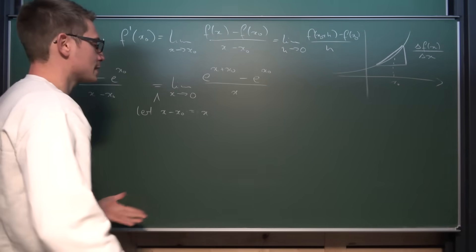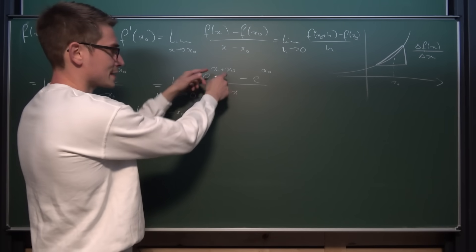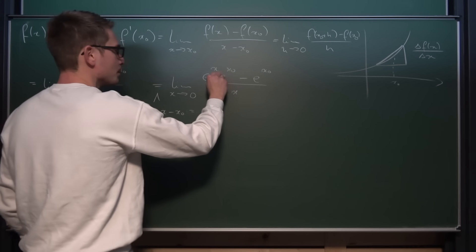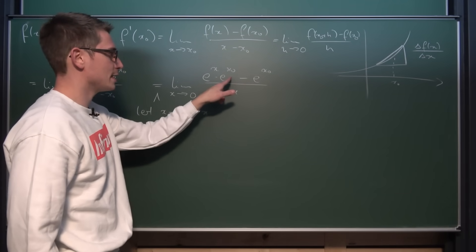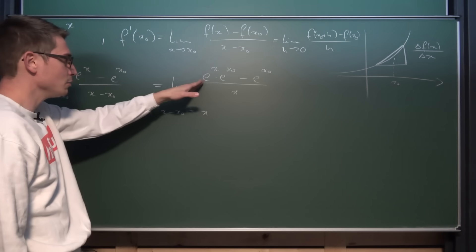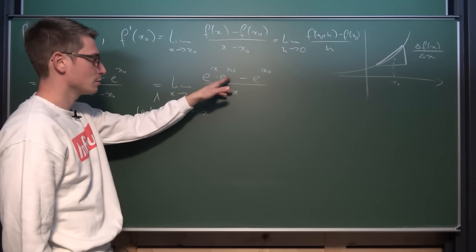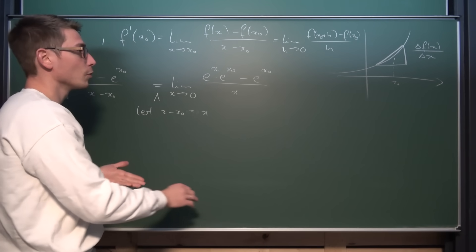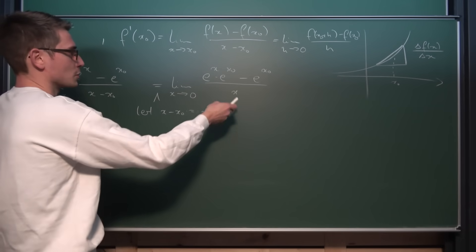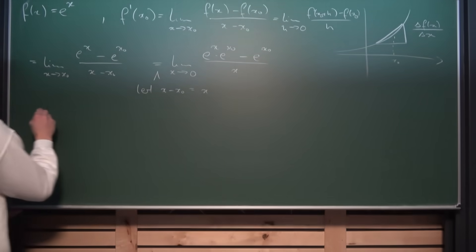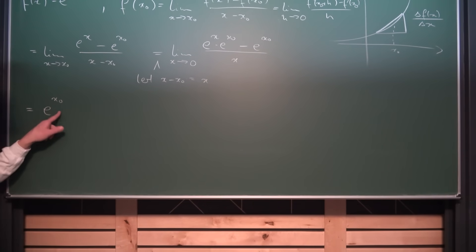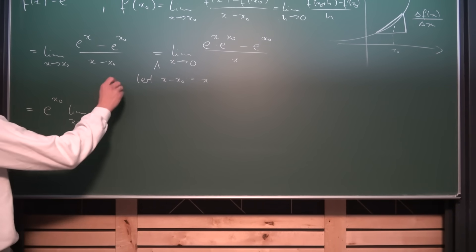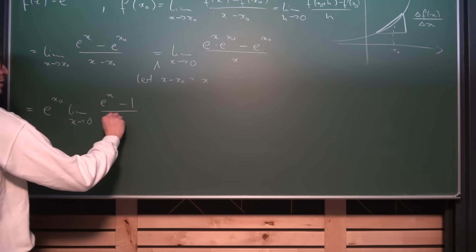From this point we can start to factor things out. Notice that e^(x+x0) is the same as e^x times e^(x0), so we can factor out e^(x0) as a common factor. Since x0 is just a constant — a fixed point we are looking at — we can drag it outside the limit, giving us e^(x0) times the limit as x approaches 0 of (e^x minus 1) divided by x.